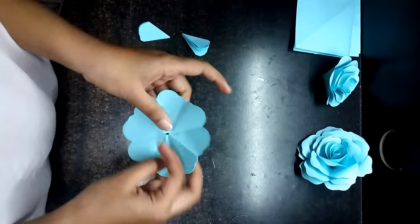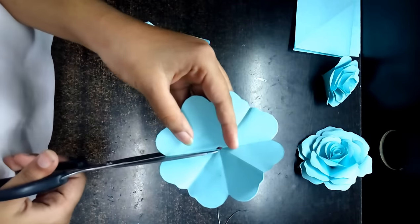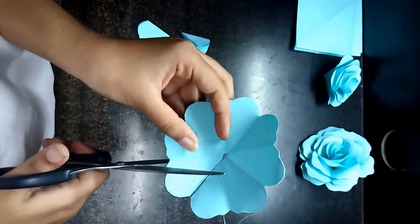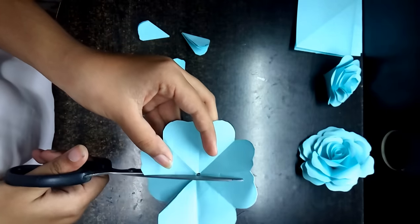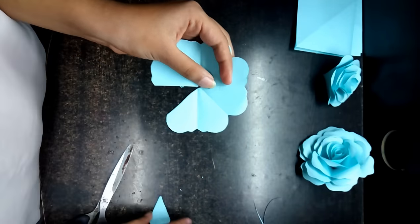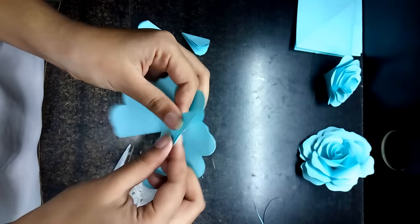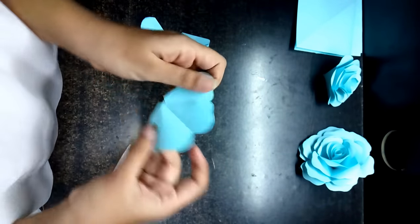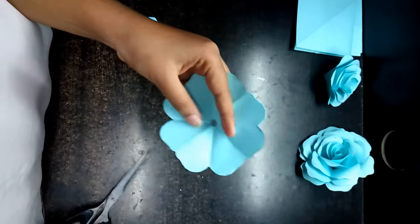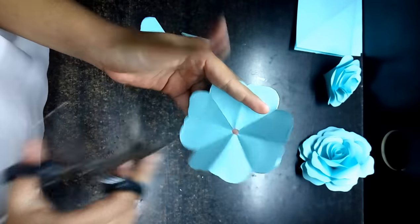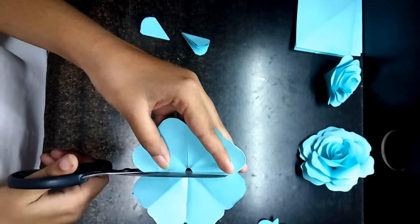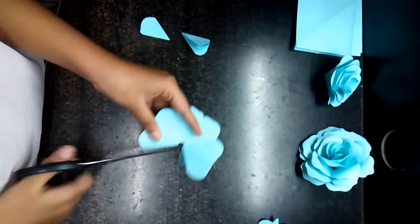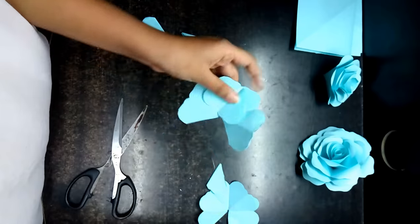Open it and cut one petal out of it like this. See, one petal like this. We are going to use this one too, so keep it like this. Now take the second one and cut two petals from this and this. So we are going to cut two petals. Here we have, okay, so keep it with this.